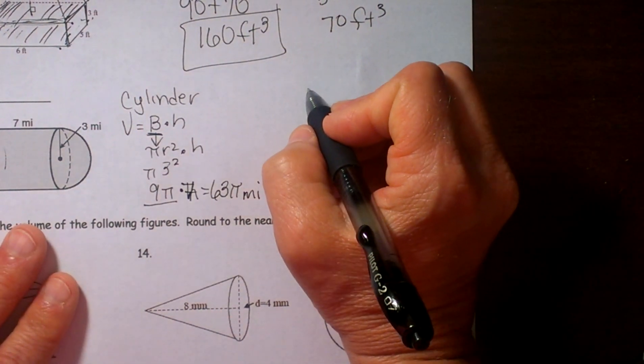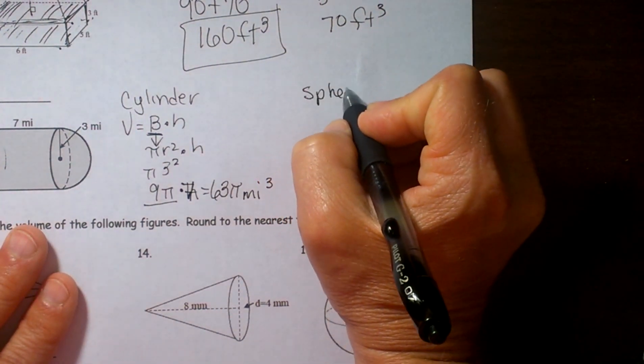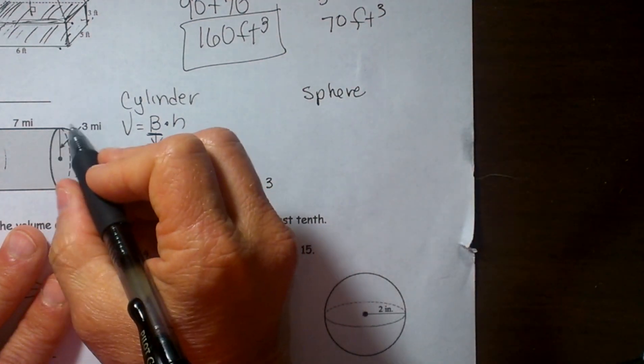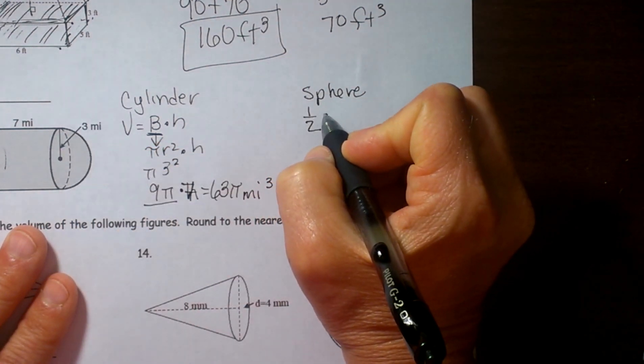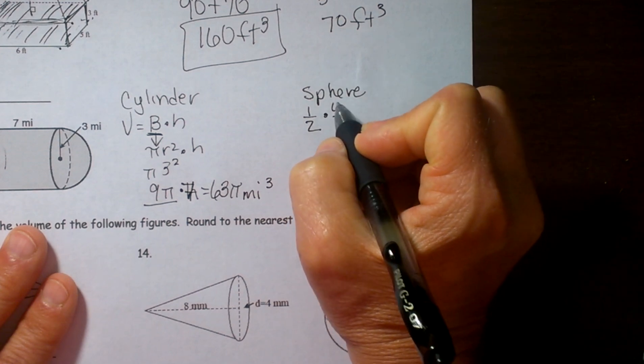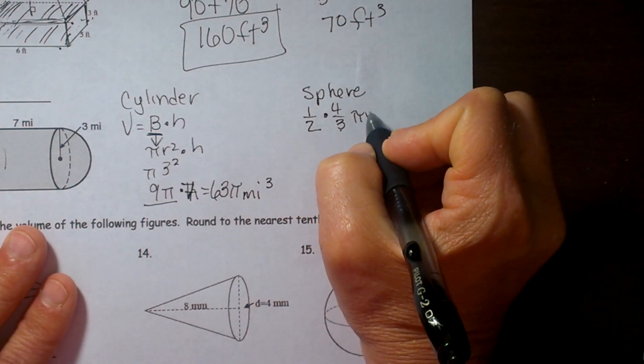Now let's go over here and talk about the sphere for a minute. This is a hemisphere, just half a sphere. So we want to take one half of the volume of a sphere where the sphere formula is 4 thirds pi r cubed.